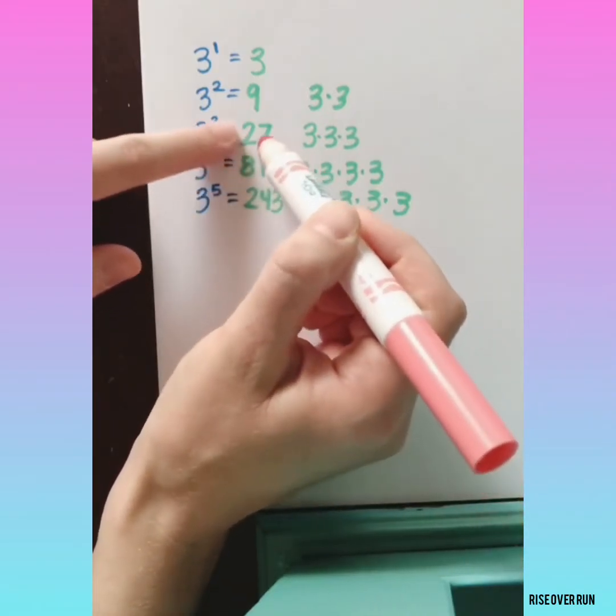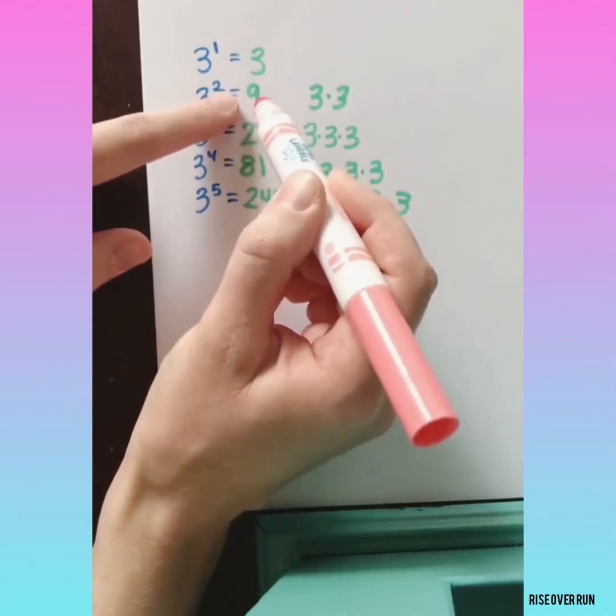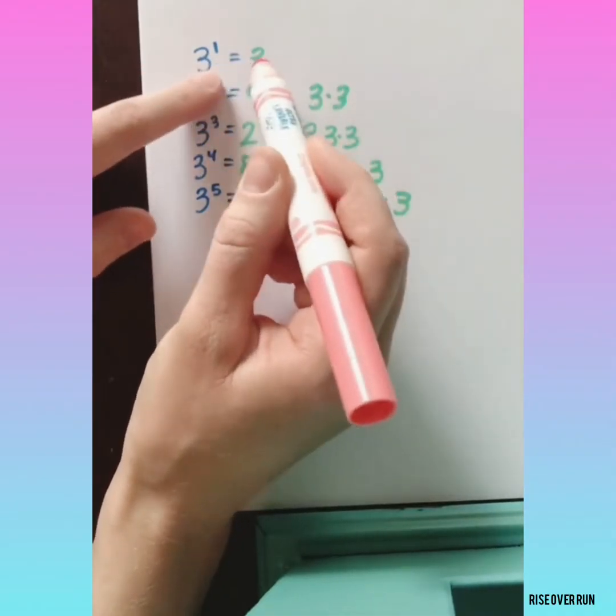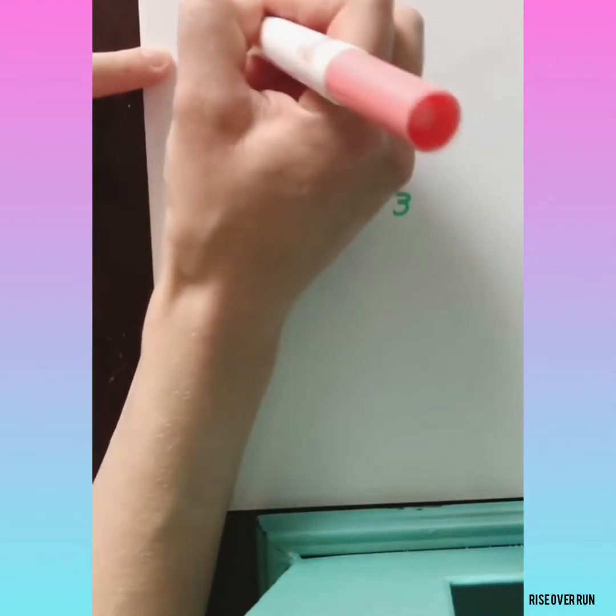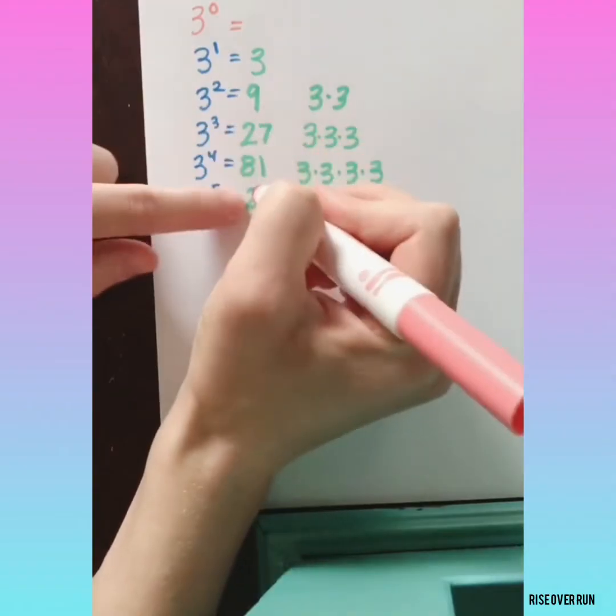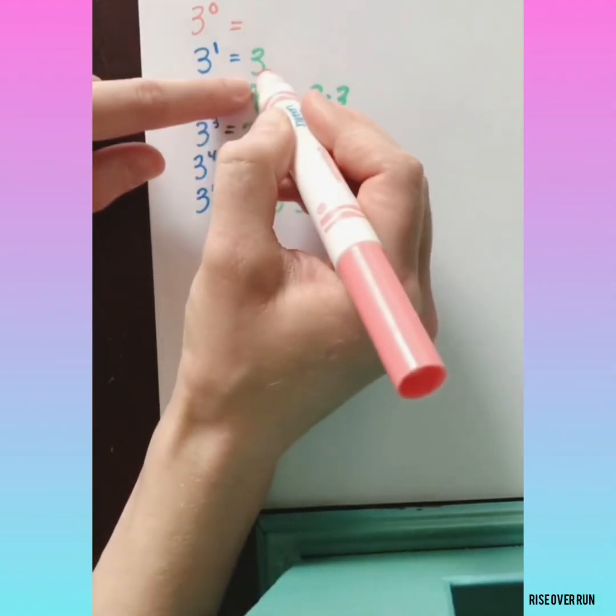81 divided by 3 is 27, divided by 3 is 9, divided by 3 is 3. So if I want to continue this pattern to find 3 to the 0 power, I need to continue this pattern by dividing by 3.